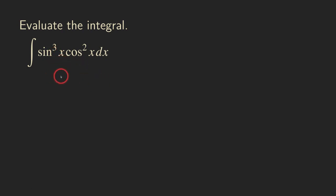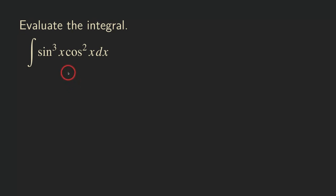For sine and cosine, we usually will look for an odd power — whether the sine has an odd power or cosine has an odd power. It doesn't matter which one has an odd power. We just need at least one of them to have an odd power so that we can perform a u-substitution. It will also require us to use the Pythagorean identity to do some manipulation.